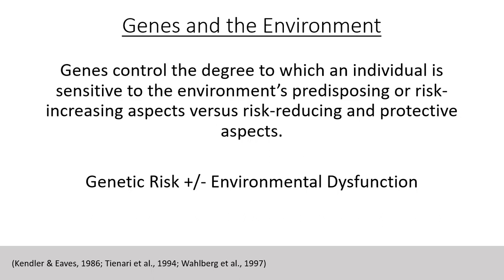There is a dynamic interplay of genetic predisposition and environmental factors. A positive rearing environment can protect a high-risk individual against the future development of enduring psychotic illness. On the other hand, without genetic predisposition, even a highly dysfunctional family situation will not produce enduring psychotic illness. The combination of genetic risk and a dysfunctional environment, however, places an individual at high risk. Put simply, genes control the degree to which an individual is sensitive to the environment's predisposing or risk-increasing aspects versus risk-reducing and protective aspects.